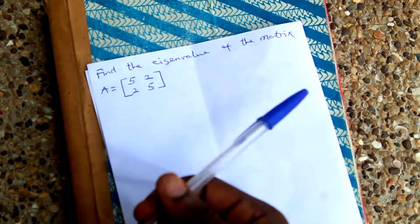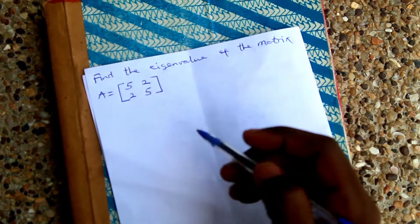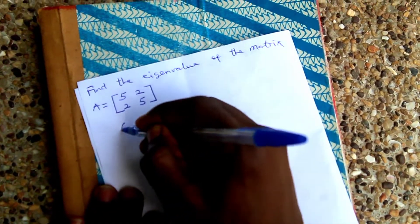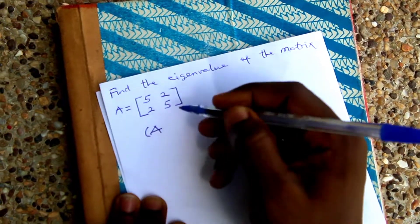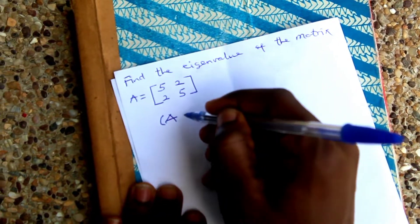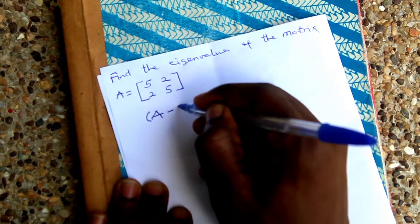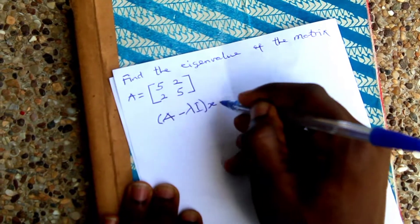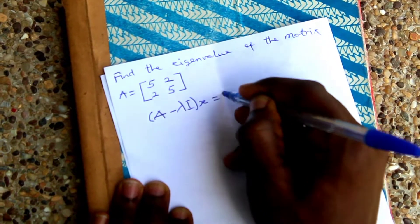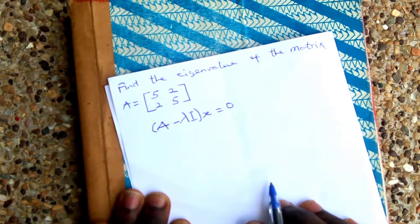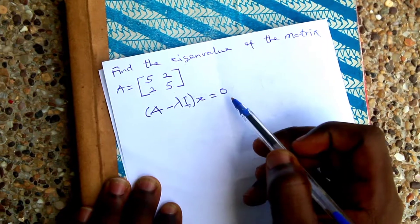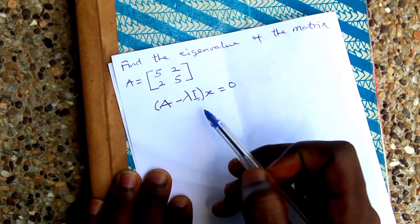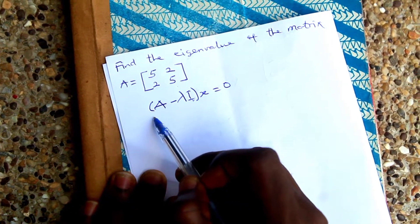The general formula to find the eigenvalue of a matrix is: (A minus lambda I) times x equals zero. There is a short way of finding eigenvalues without going through all that calculation.